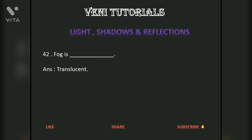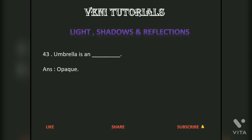Fog is dash — answer: translucent. Umbrella is dash — answer: opaque. A lighted fluorescent is dash — answer: opaque.